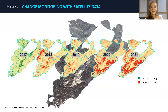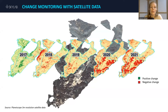Moving on now to satellite imagery and our change monitor product. This is lower resolution, but it's the perfect tool if you want to get an overview of what's happening over much larger areas. This is an example of a spruce forest in Germany which was badly affected by bark beetle. All of that red color shows the negative change — the damage that's been done on an annual basis between 2017 and 2021.